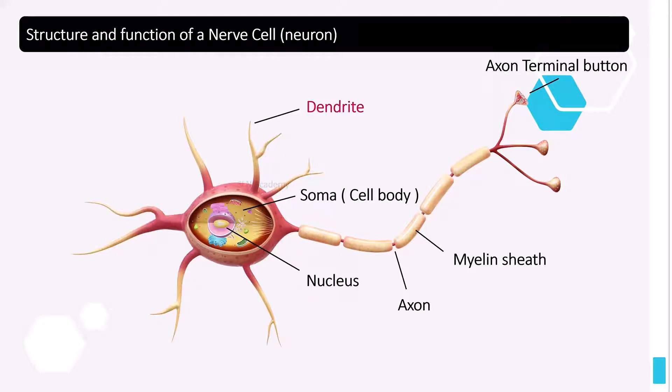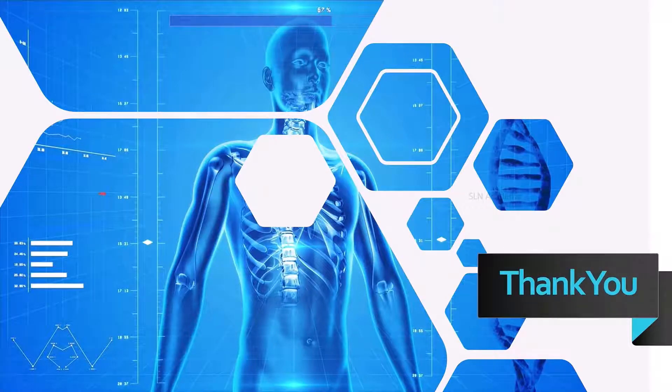Dendrites are branched extensions of a nerve cell. Soma is the cell body. An axon is called a nerve fiber. For some nerve cells axons are shorter and for some they are longer. Myelin is a fatty substance present in nerve cells. Axon terminals are the terminations of branches of an axon.